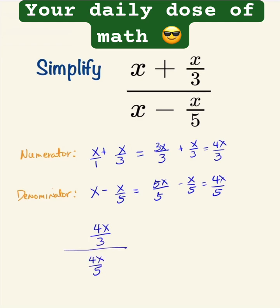When you divide by a fraction, take the reciprocal of the denominator. 4x over 3 times 5 over 4x. Now we can cancel the 4x and this is equal to 5 over 3. And that's our answer.